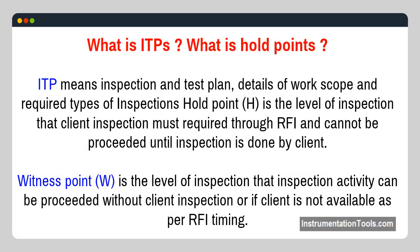What is an ITP and what are hold points? ITP means inspection and test plan — details of work scope and required types of inspections. Hold point (H) is the level of inspection that client inspection must be required through RFI and cannot be preceded until inspection is done by the client. Witness point (W) is the level of inspection where the activity can proceed without client inspection, or if the client is not available as per RFI timing.